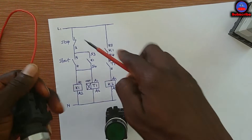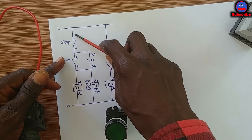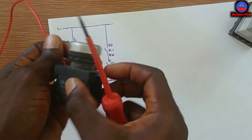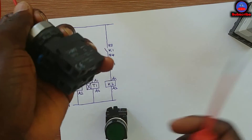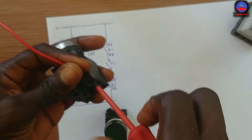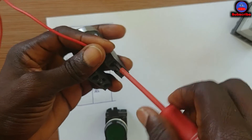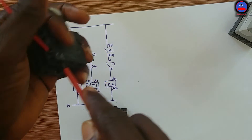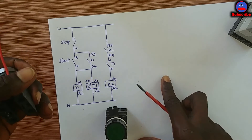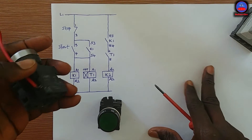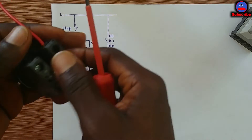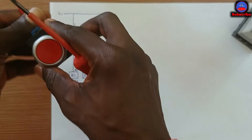From the breaker, the main line comes to line one on the stop button. I also have a Part 1 video on sequential circuit — a manual one — so please kindly watch that one first before watching this one, so that you understand it well.